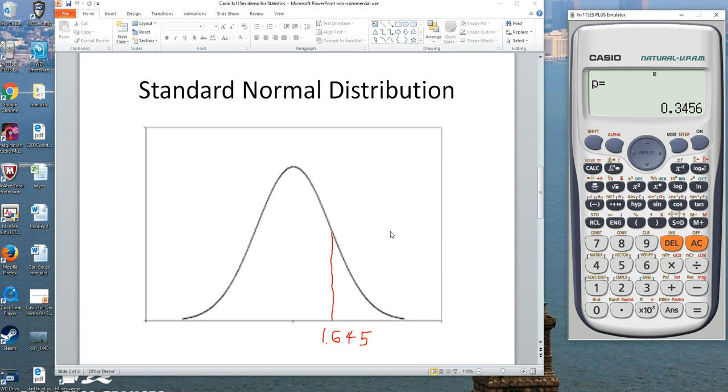Well, let's try one. I would like to know the area under the curve that's to the left of 1.645. Normally you'd get out your table two for this, right?